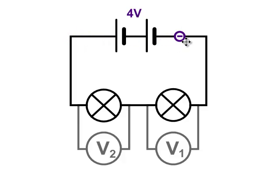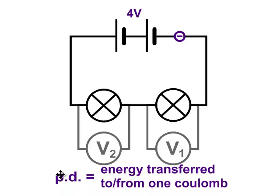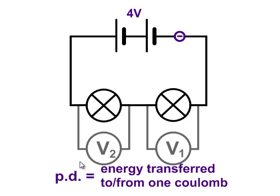Potential difference is all about energy transfer. Potential difference across a point in the circuit tells you how much energy is transferred to or from a coulomb of charge between those two points.